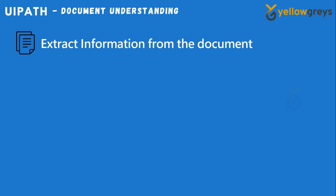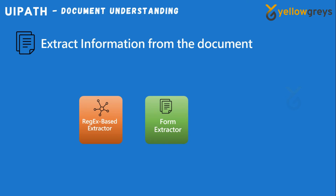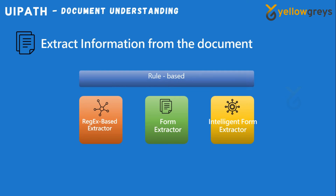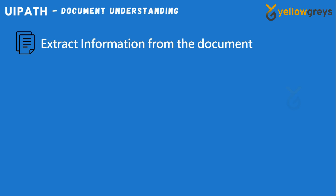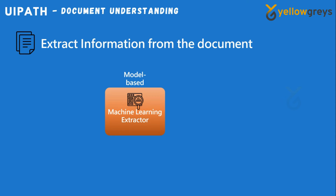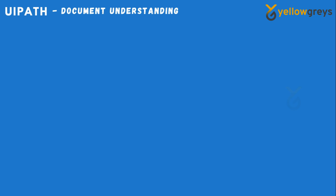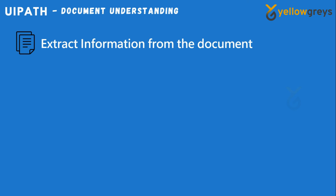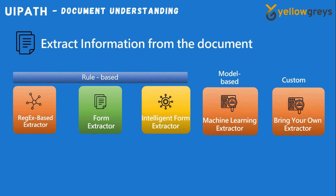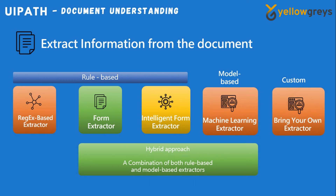The five extraction methods are: Regex Based Extractor, Form Extractor, and Intelligent Form Extractor — these three are rule-based methods. Then there are two model-based methods: Machine Learning Extractor and a custom Bring Your Own Extractor. We can combine all of these extraction methods into what we call a hybrid approach.